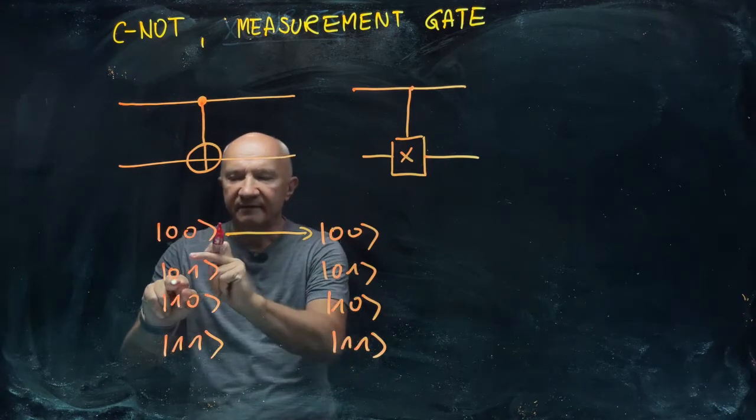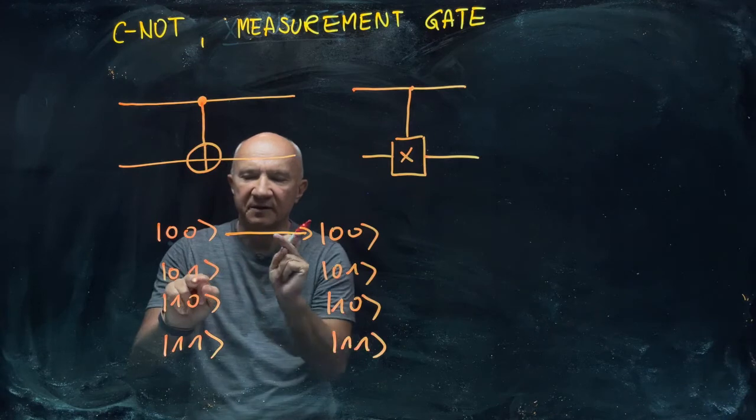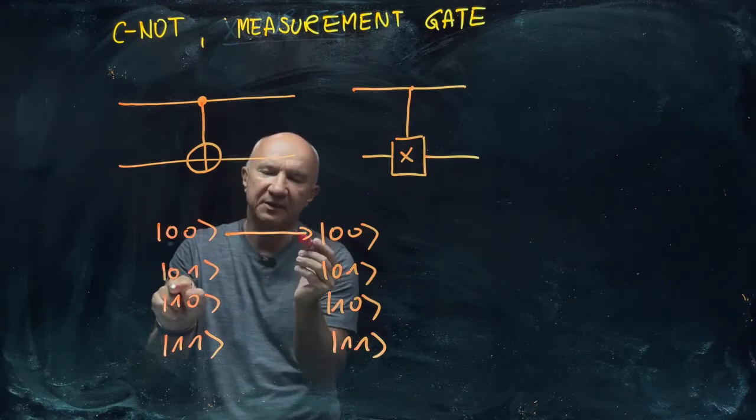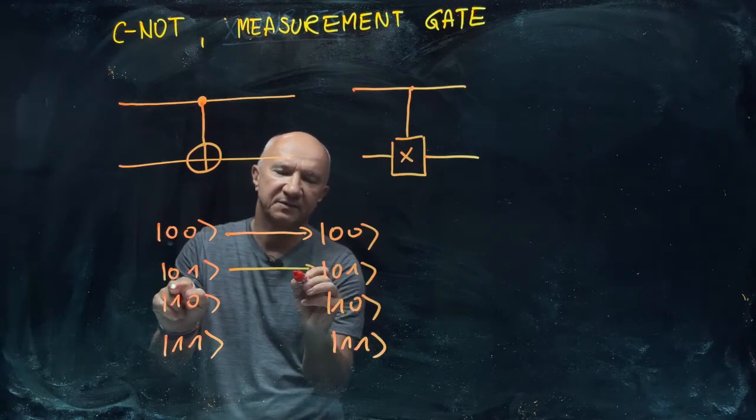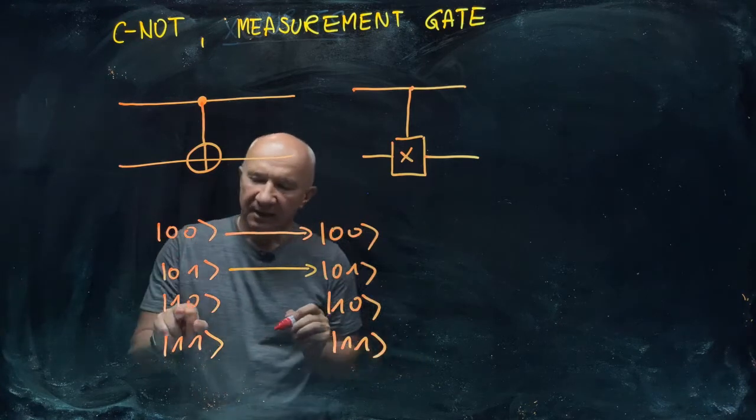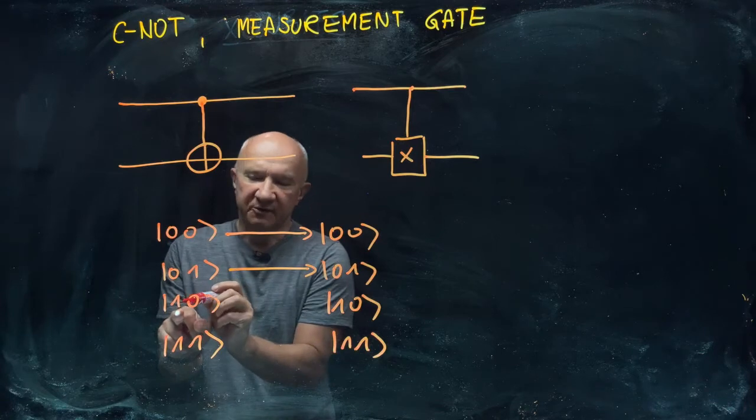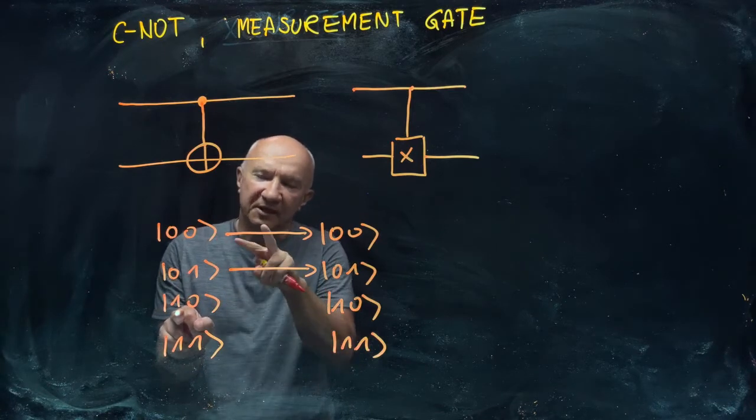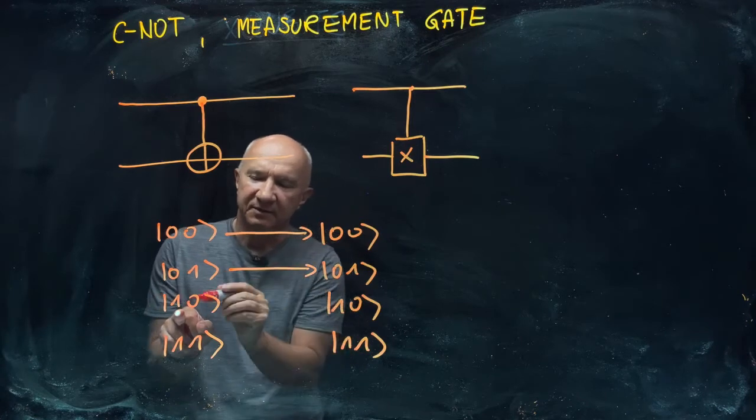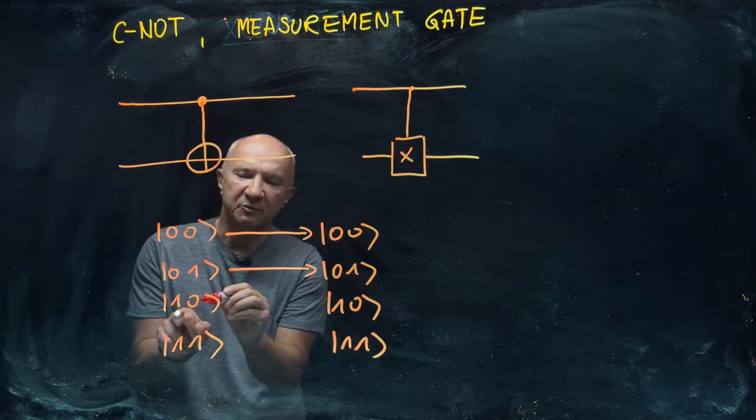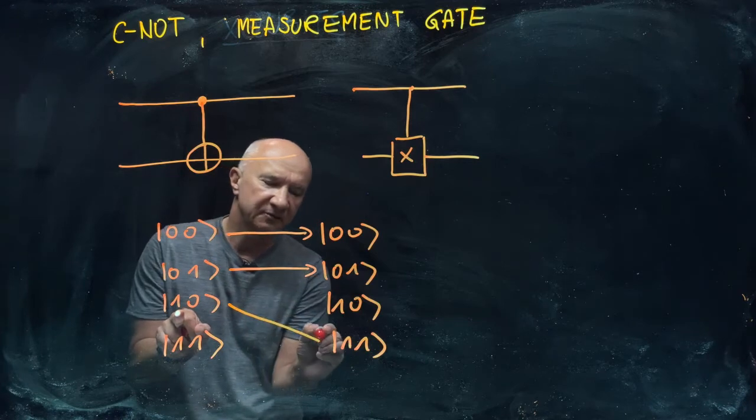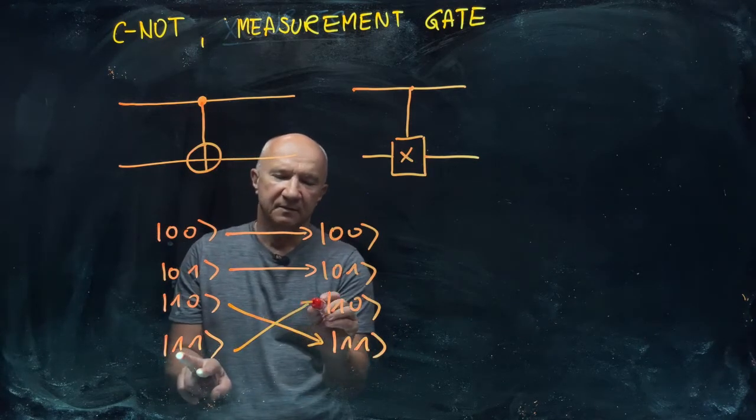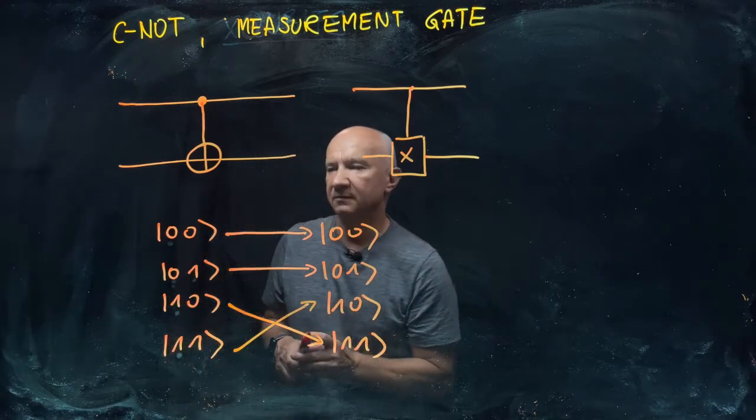Again, if the first qubit is in state zero and the second one is in state one, it doesn't matter because the first one is in zero. We apply the identity—nothing happens to the second qubit. Now if the first qubit is in state one-one, then we apply the bit flip. So zero on the target qubit becomes one. This one goes into this one, and this state is mapped into this state.